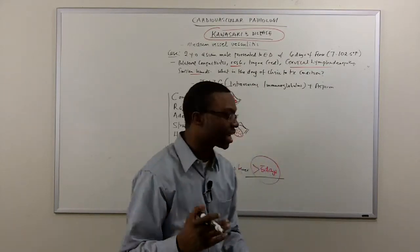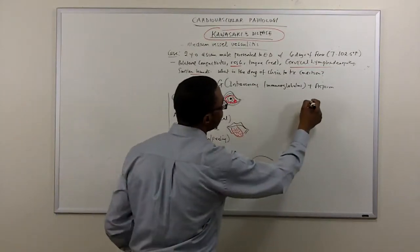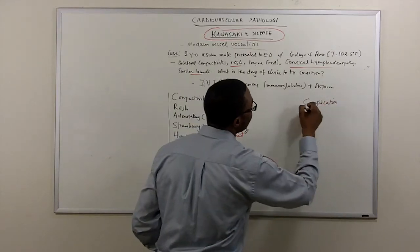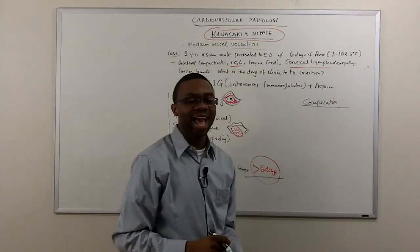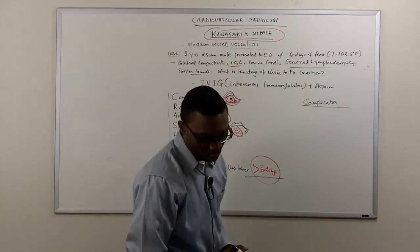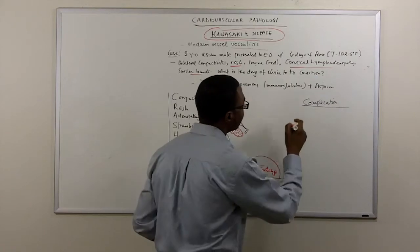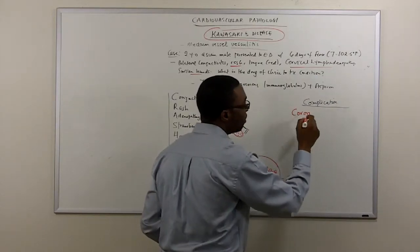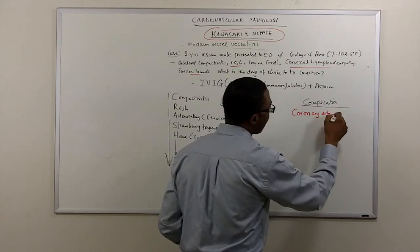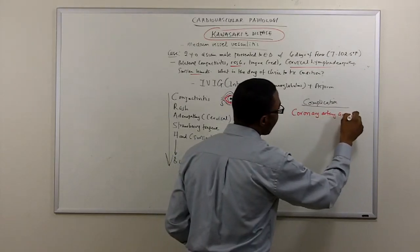And you can guarantee you, if you ever get this question, you are going to get it. And the answer is they are predisposed to coronary artery aneurysms. You must remember this.